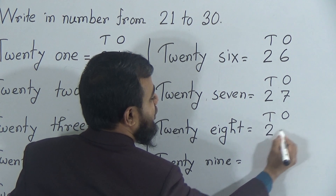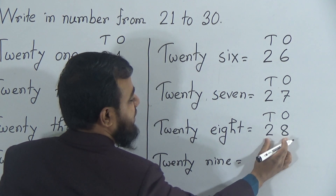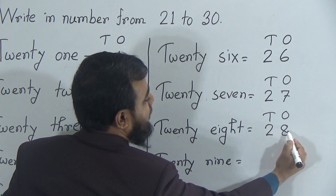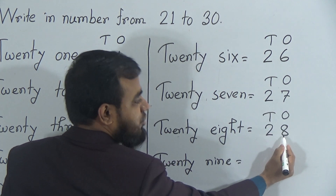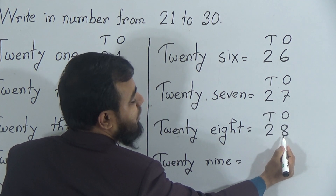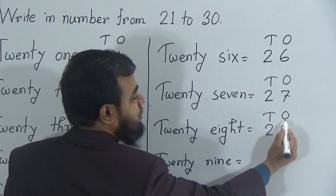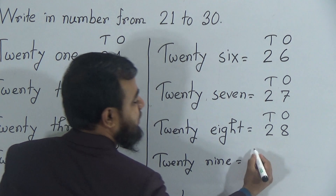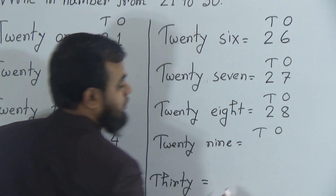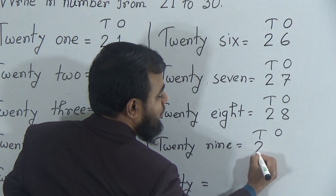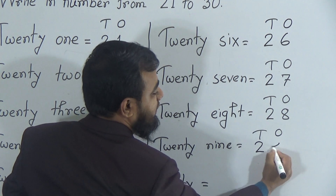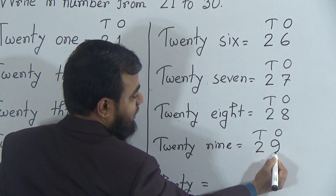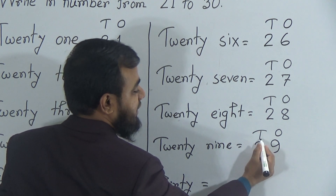The next number is 28. Two and eight makes 28 because eight comes after seven — two tens and eight ones makes 28. Now 29: we identify the tens and ones position. After eight comes nine, so two and nine makes 29 — two tens and nine ones makes the number 29.